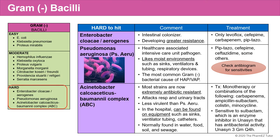The third hard-to-hit gram-negative bacilli is Acinetobacter calcoaceticus baumani complex, or ABC. Most strains of ABC are now extremely antibiotic resistant. It attacks the respiratory and urinary tracts in particular, and is less virulent than Pseudomonas aeruginosa. In the hospital, it can also be found on equipment such as sinks, ventilator tubing, and catheters. ABC is normally found in water, food, soil, and sewage.